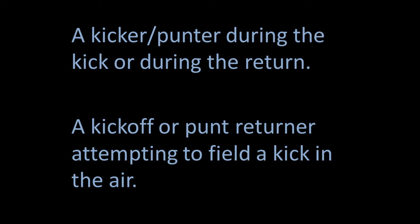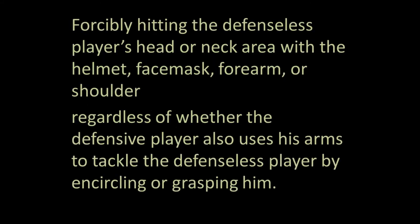Those eight categories are all about the player who is being hit. The second part of the rule defines what contact brought against them is illegal. There are two parts. First, a player cannot forcibly hit the defenseless player's head or neck area with his helmet, face mask, forearm, or shoulder — regardless of whether the tackler also uses his arms to tackle by encircling or grasping him. In other words, when tackling, aim for the chest or lower and stay away from the head and neck.